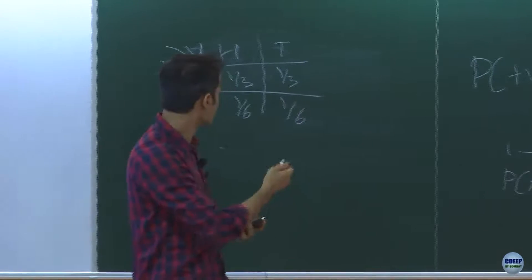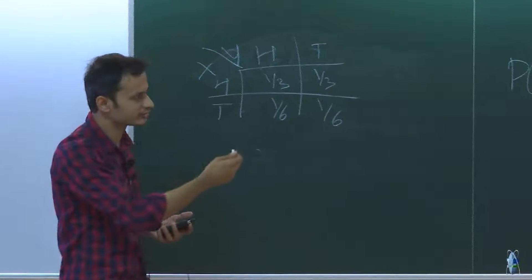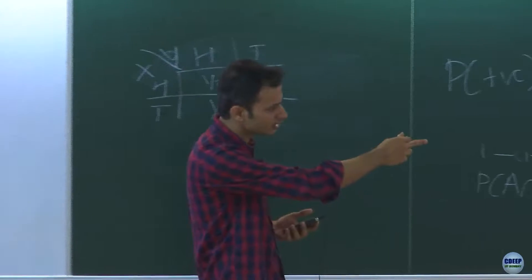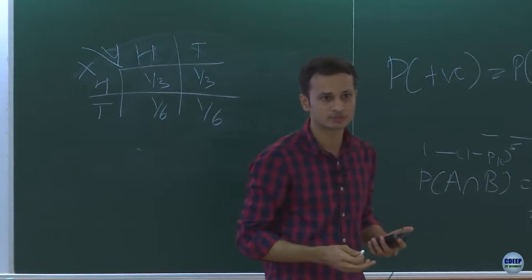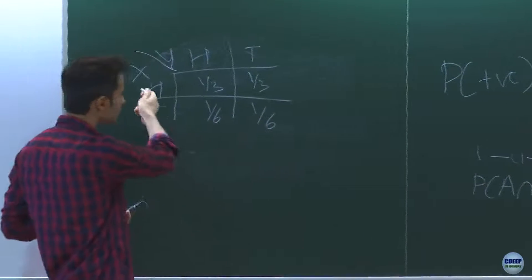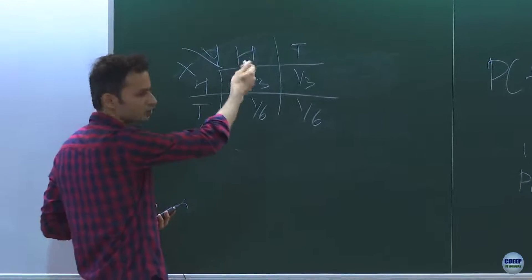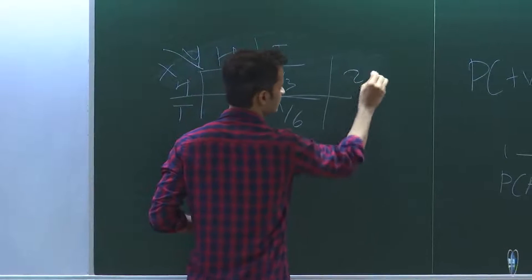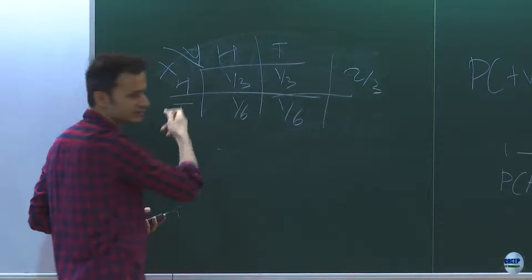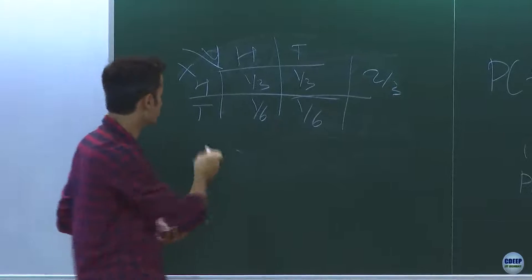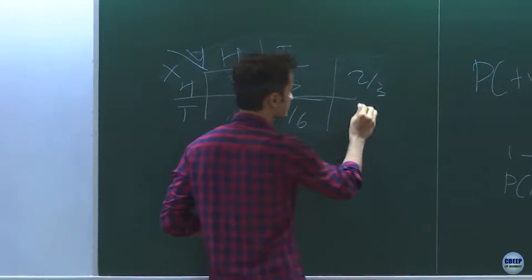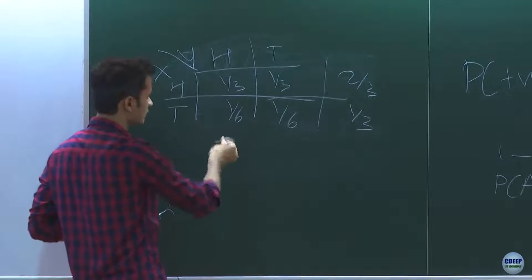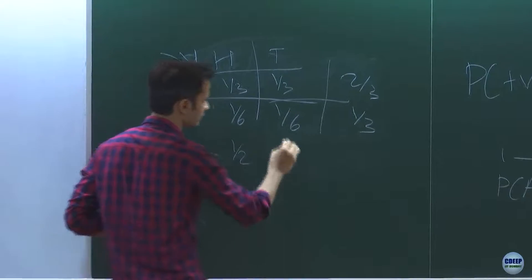The first coin is unfair towards heads and the second coin is fair. You can obtain the marginal distribution by keeping a variable fixed and summing over the other variable. So the probability of X = H would be 2/3, the probability of X = tails is 1/3, and for Y (the fair one), you get 1/2 and 1/2.